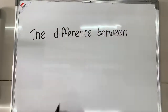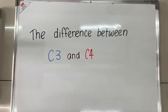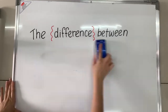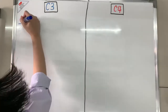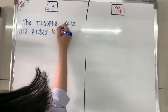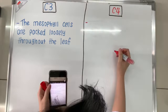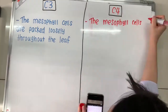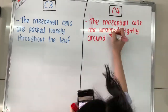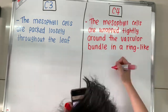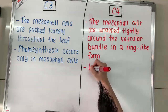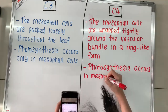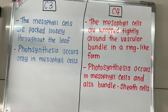Lastly, the differences between C3 and C4 plants. In C3 plants, the mesophyll cells are packed loosely throughout the leaf, while in C4 plants, mesophyll cells are wrapped tightly around the vascular bundle in a ring-like form. In C3 plants, photosynthesis occurs in mesophyll cells, whereas in C4 plants, it occurs in both mesophyll and bundle sheath cells.